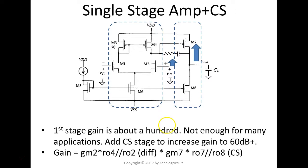It probably is not enough for many applications. So you need a second stage to add a little more gains to increase the total gain to 60 dB plus. So when you look at the small signal gains, essentially that's the gain of first stage, GM2 multiplied by the output resistance here, which is RO4 in parallel with RO2. That's the first stage, the first differential stage gain. And then after that, that's the common source gain. It's GM7 multiplied by RO7 in parallel with RO8.